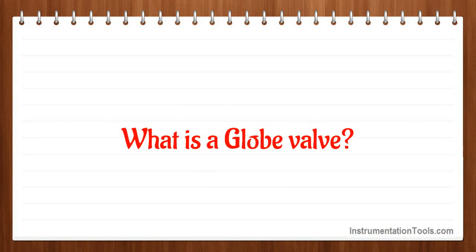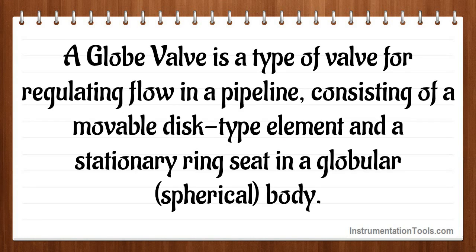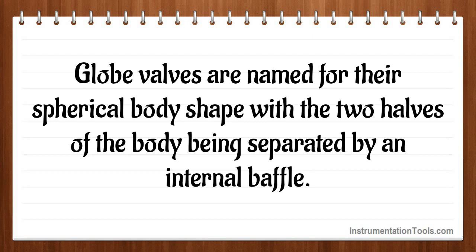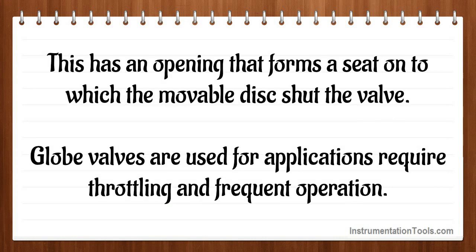What is a globe valve? A globe valve is a type of valve for regulating flow in a pipeline, consisting of a movable disc type element and a stationary ring seat in a globular, spherical body. Globe valves are named for their spherical body shape, with the two halves of the body being separated by an internal baffle. This has an opening that forms a seat onto which the movable disc shuts the valve. Globe valves are used for applications requiring throttling and frequent operation.